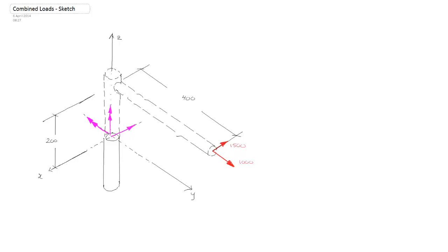I've moved the animations into the permanent picture. Before we move on, let's capture the magnitudes of these moments and force. The first one is the 1500 newtons. The second caused a torque about the z-axis: that's 1500 newtons multiplied by its perpendicular distance of 400 millimeters. The last one, translating from the top of the post down to the mid-section, caused bending about the y-axis: 1500 newtons multiplied by the perpendicular distance of 200 millimeters.